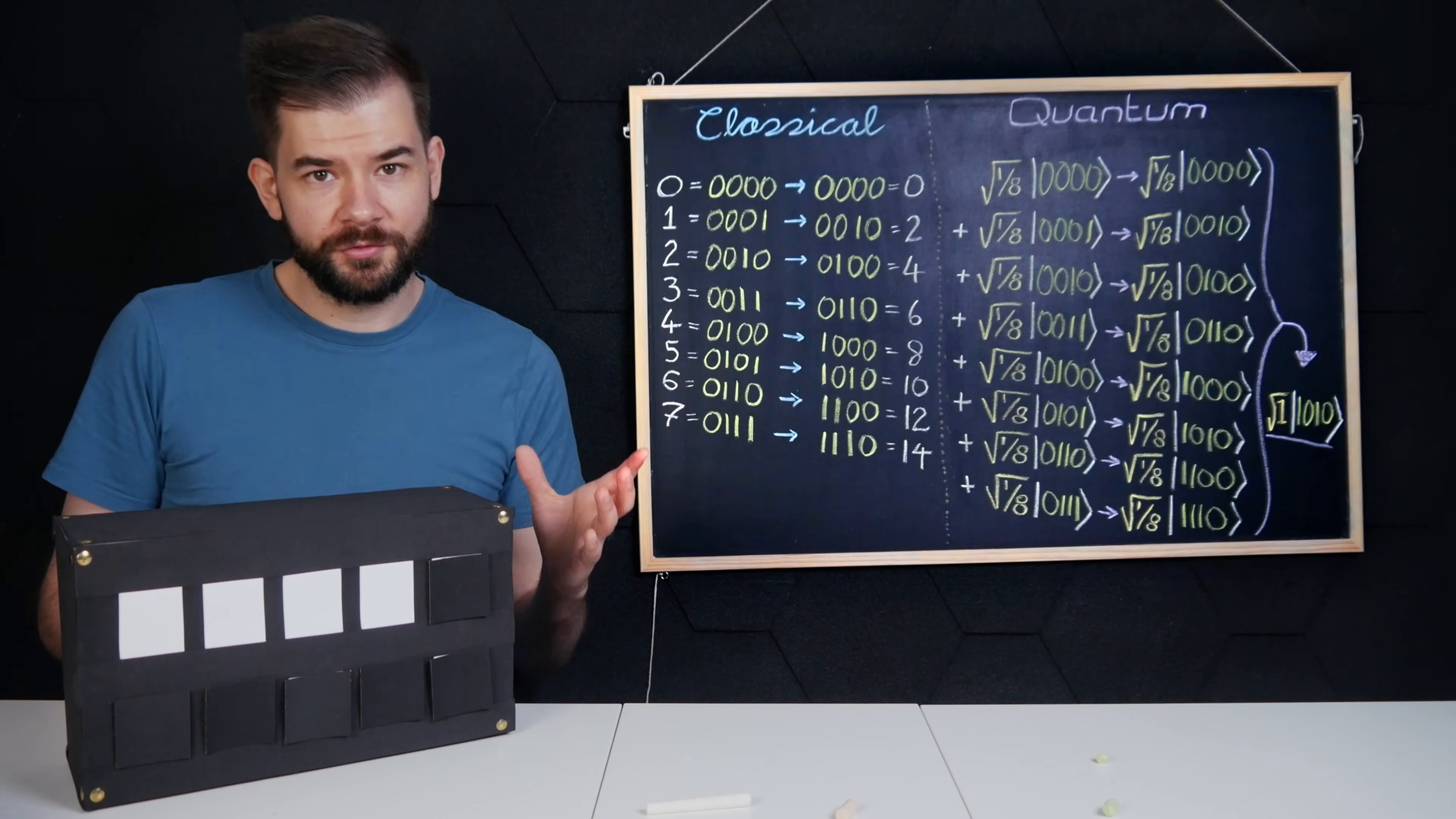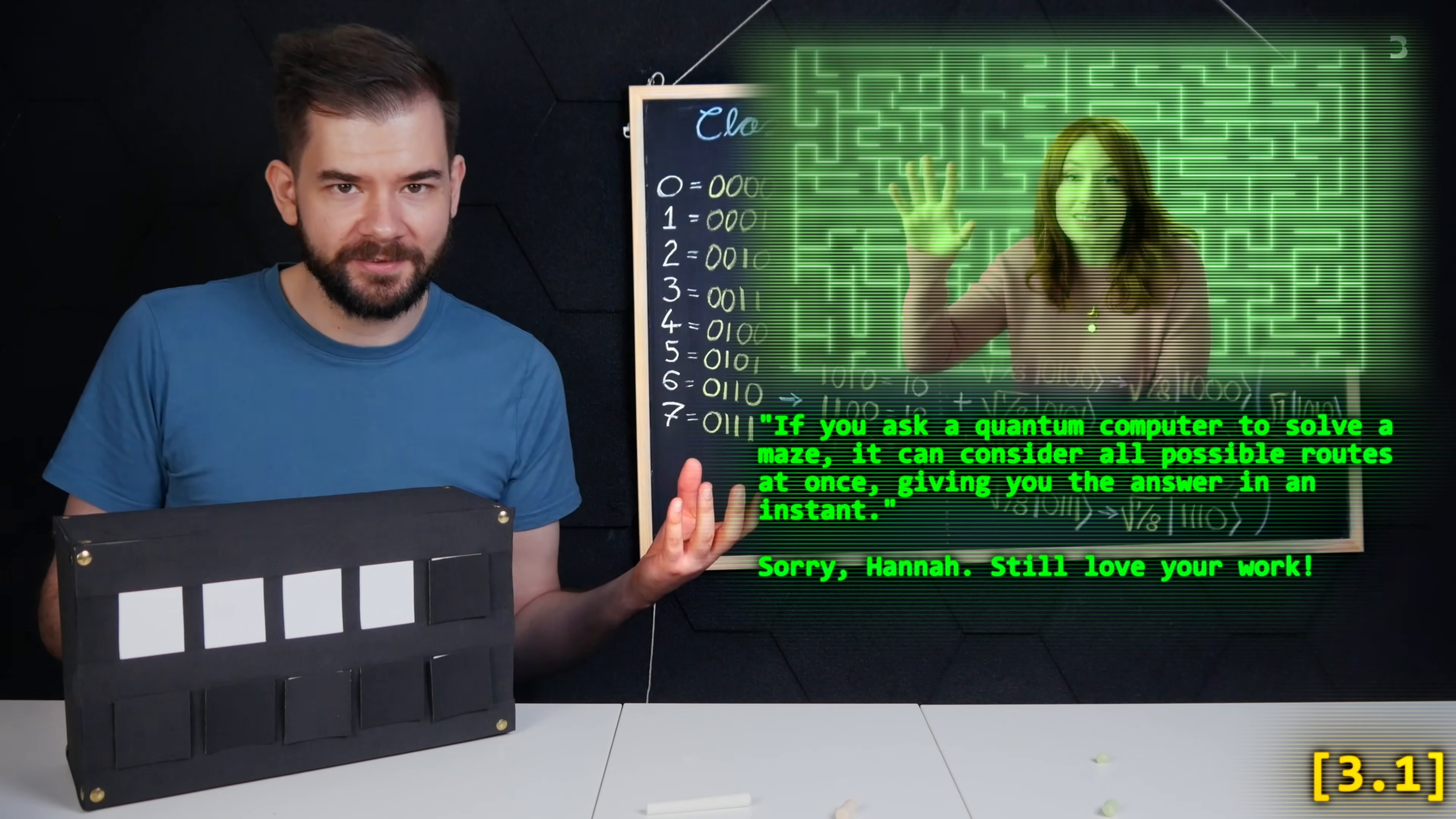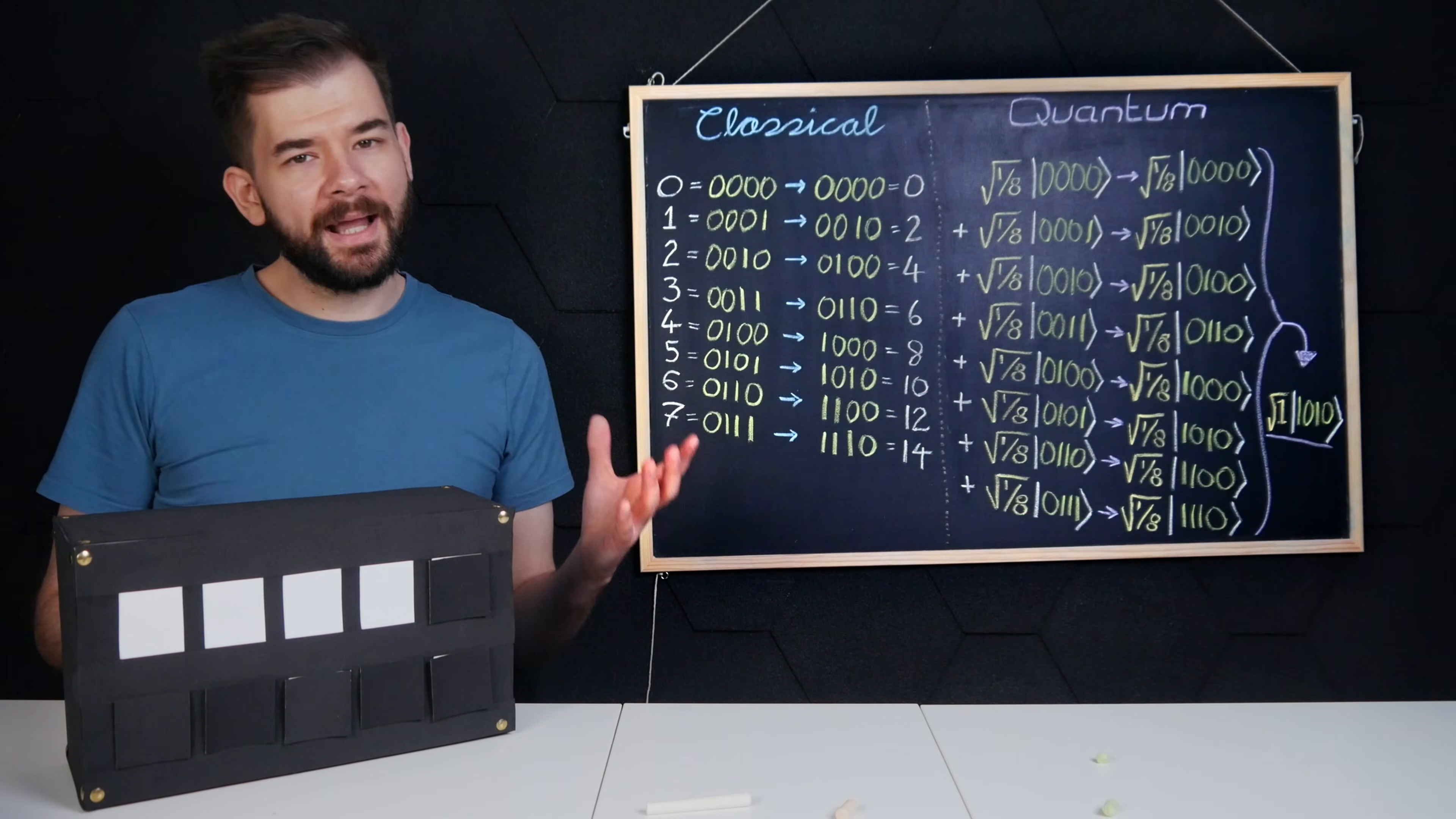They are very good at only specific things. A common description of quantum computers is that they perform all calculations simultaneously, thus speeding up computations. But this is misleading. They only ever return one answer. So where might they be useful?